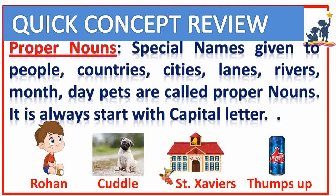See here. Rohan is the name of a person. Cuddle — it is the name of an animal. Saint Xavier's — that is the name of a school or a place. Thumbs Up — that is the name of a thing.